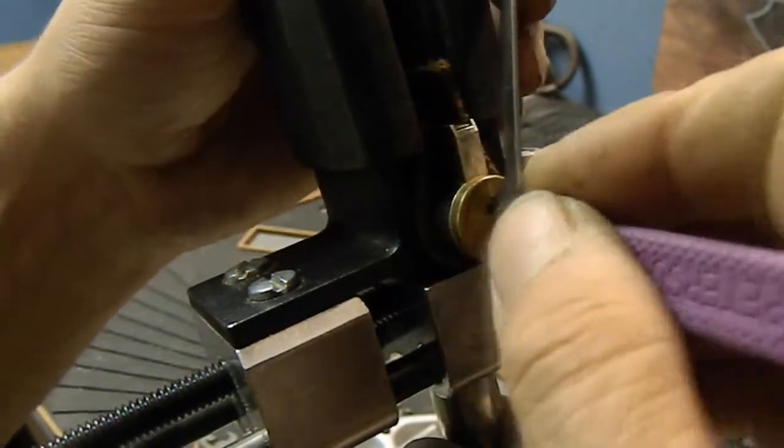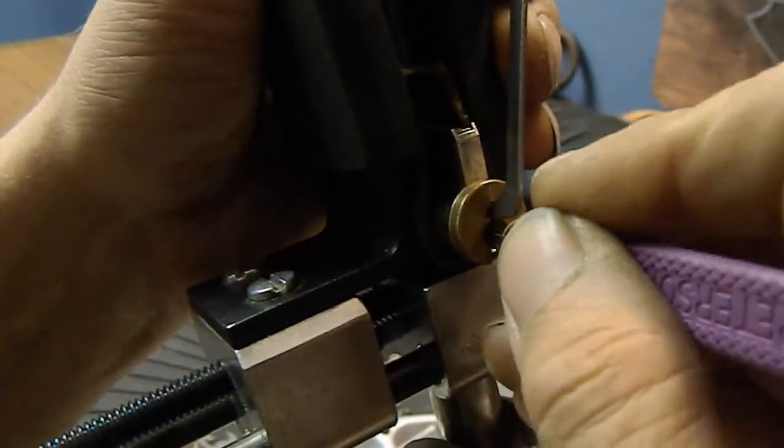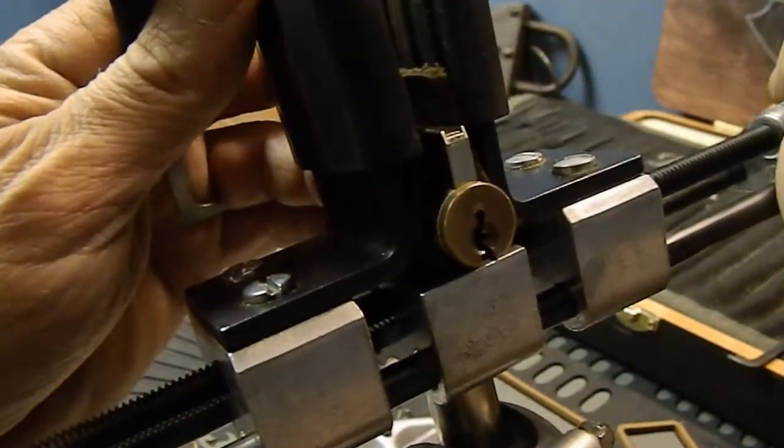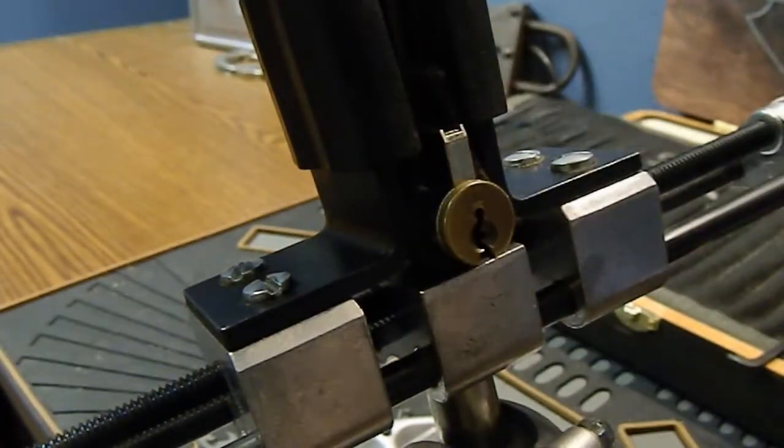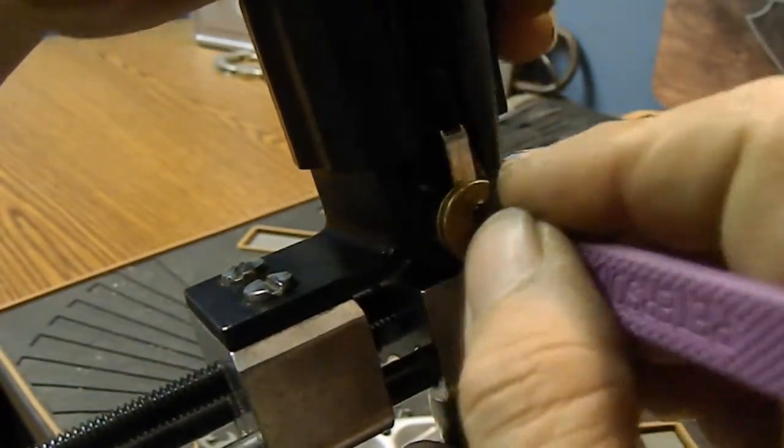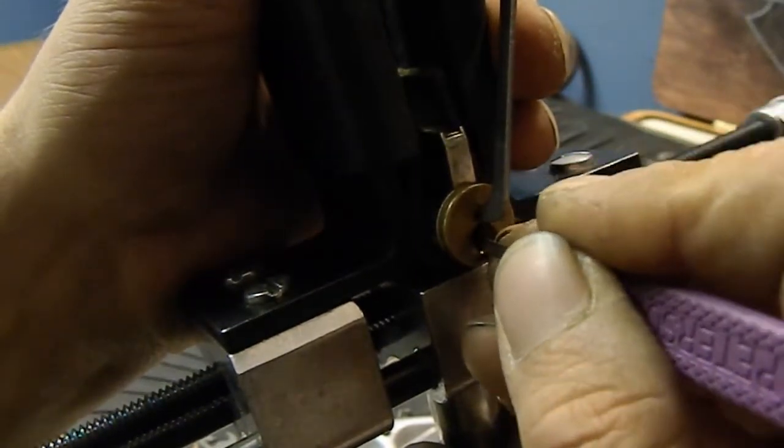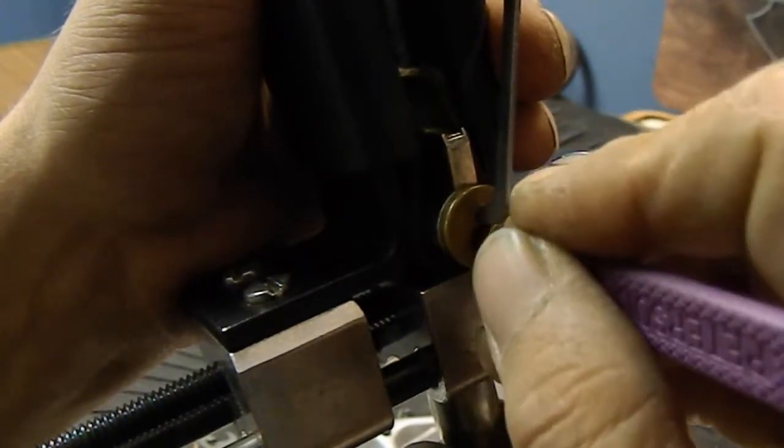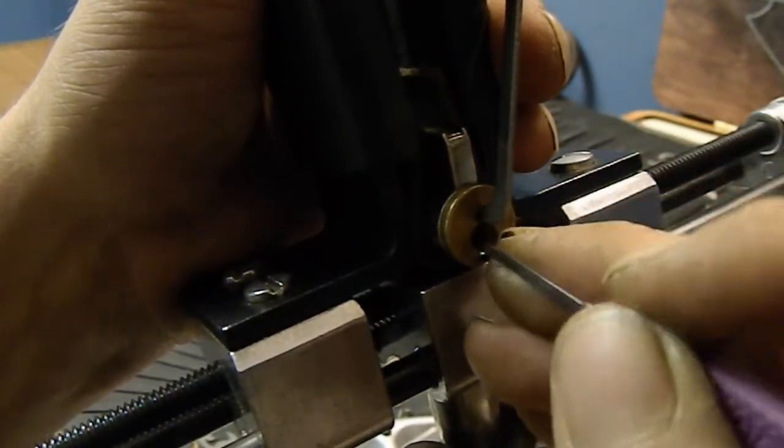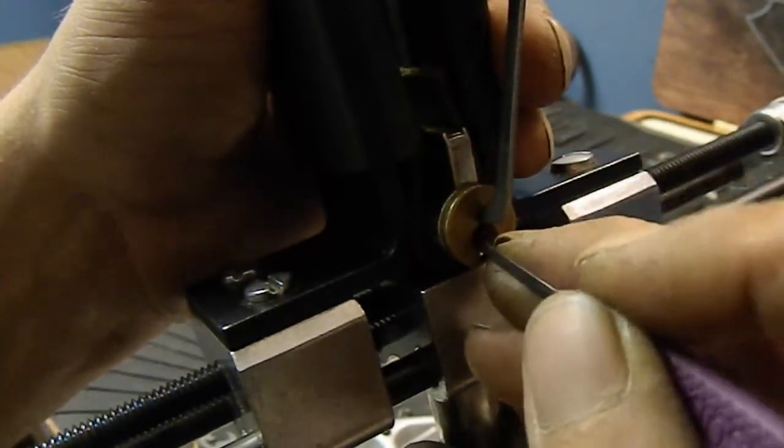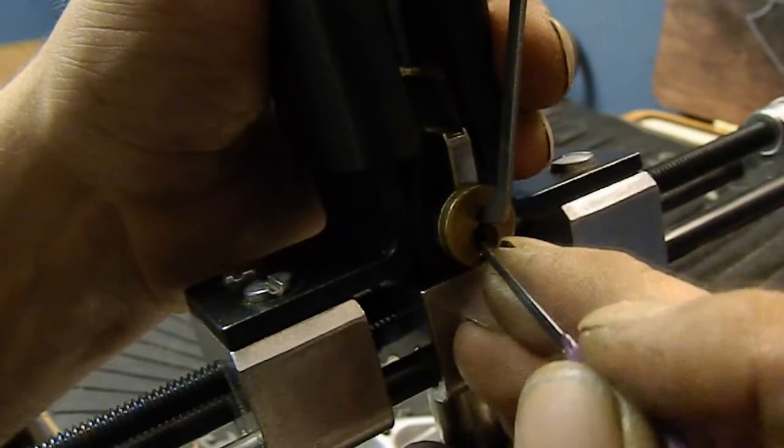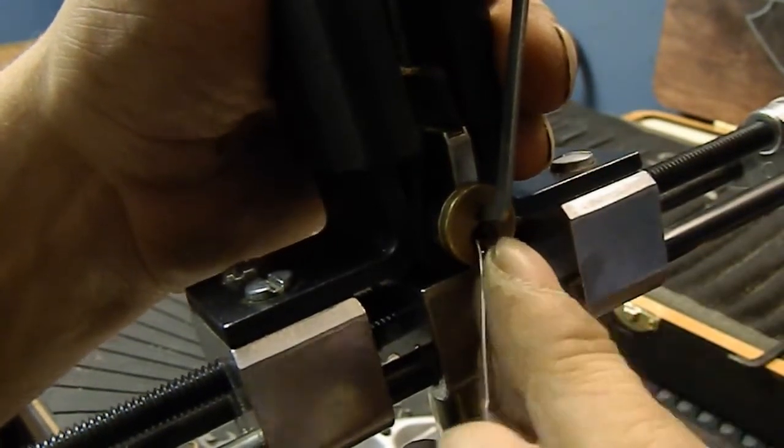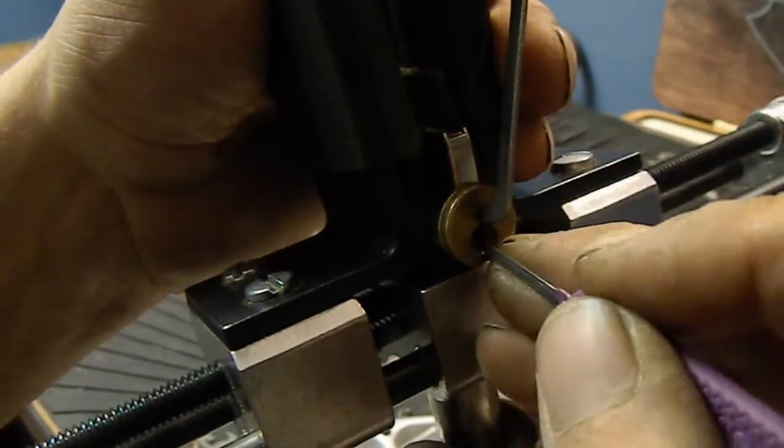I'll do what I always do, which is start in the back of the lock and search for binder. Let me make sure it's in the vise good. We're gonna start in the back of the lock and pull forward and search for binder. I'm not gonna pull forward because it's already binding in the back. That was five or six. Let's see if this is a five or six pinner. Okay, I just got a little bit on three.